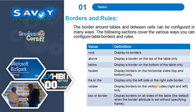Borders and rules. The border around tables and between cells can be configured in many ways. The frame attribute options are: void — display no borders; above — display a border on the top of the table only; below — display a border on the bottom only; hsides — display borders on the horizontal sides, top and bottom only; lhs or rhs — display only the left side or the right side border; vsides — display borders on the vertical sides, right and left only; box or border — display borders on all sides of the table.